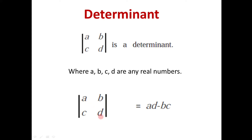For this determinant, we take the product of a and d — that is the first term of the first column and the second term of the second column — that is ad, minus the product of b and c. So ad minus bc is the value of the given determinant. We must take care that the first product is of a and d, and the second product is bc. This is the concept of determinant we will use for getting the solution of two simultaneous linear equations.